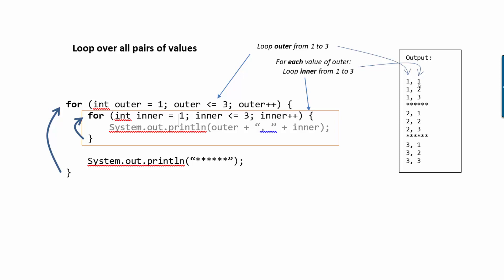So while outer is its first value, while outer is equal to one, as you see here, we're looping inner all three times. So inner goes one, two, three.